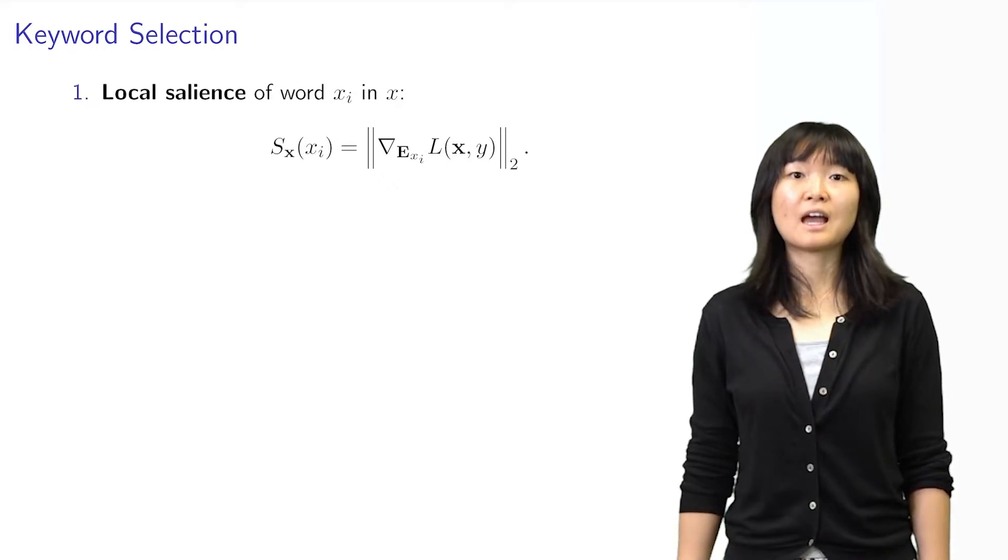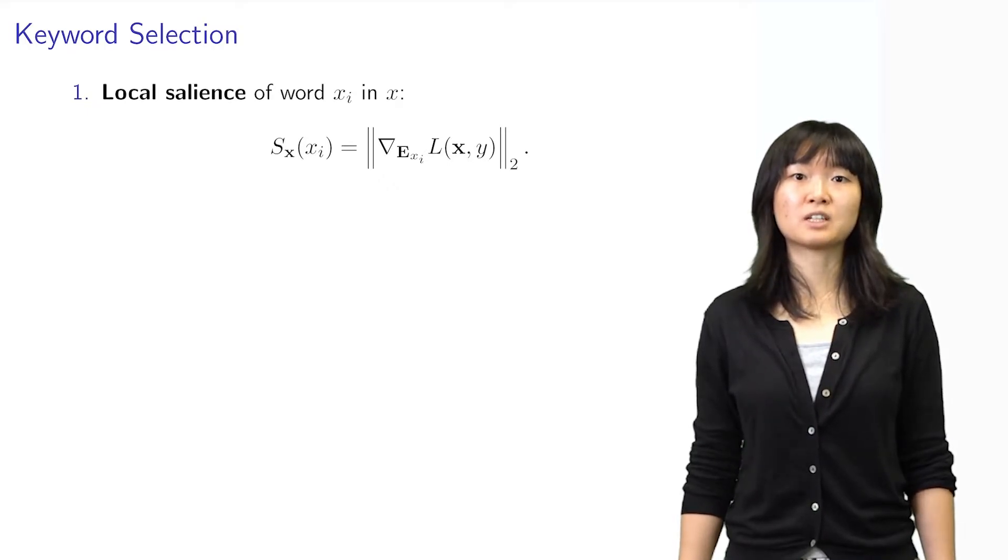We can look at how we select keywords given a classification task. First, we can compute the importance of a token in a given example. Here, L is the classification loss of document X with label Y.